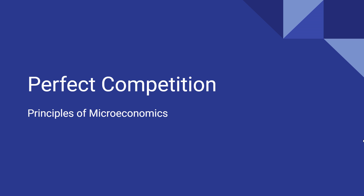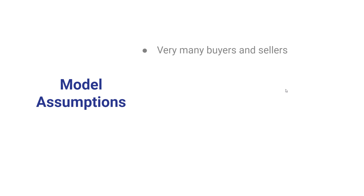In this video, we're going to talk about the market model of perfect competition. There are a number of basic assumptions in the model of perfect competition. The first is that there are very many buyers and sellers. The product they're producing is assumed to be identical — when you buy the product, you don't care who produced it because the output of each and every firm is identical to that of every other firm.